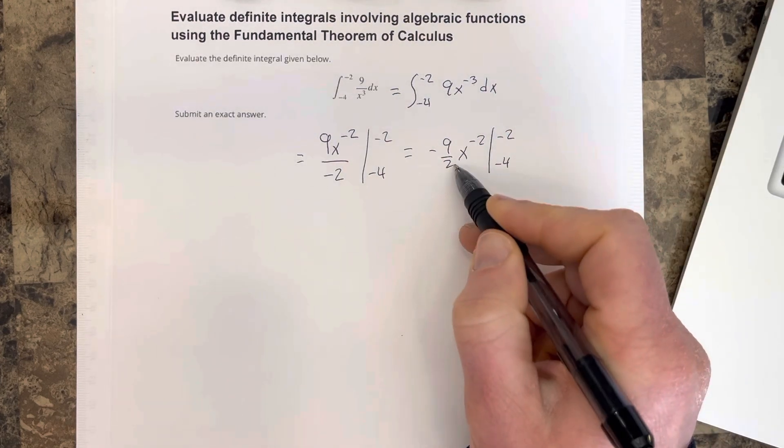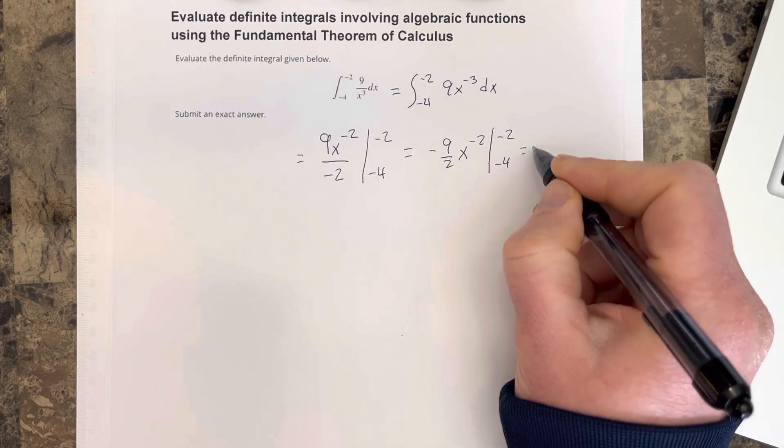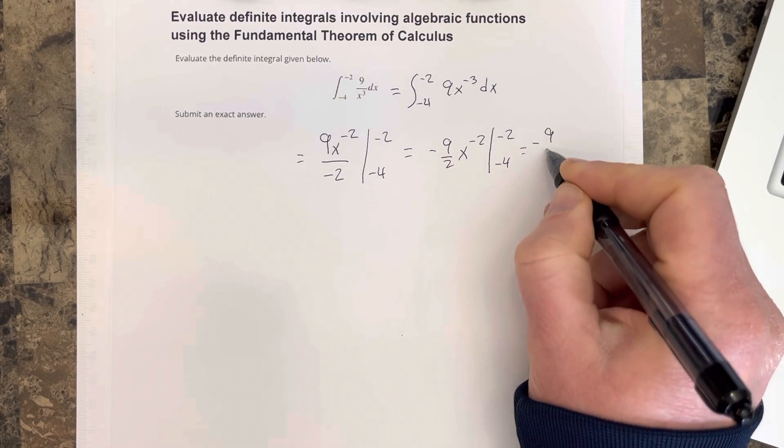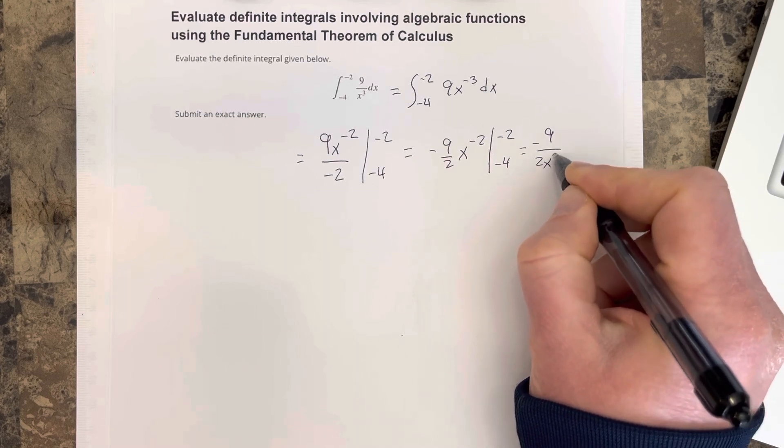I'm going to write that in the denominator, so we actually end up with negative 9 over 2x squared,